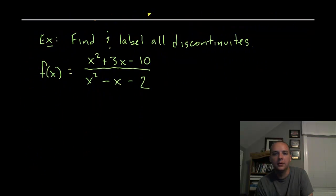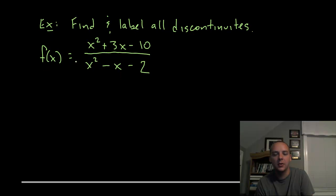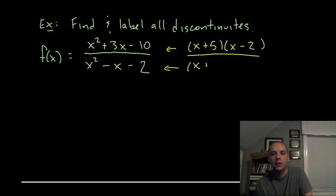Okay, so let's take a look at an example here. Find and label all the discontinuities of this function here. So this is a rational function, as we would probably guess what we need to do first is factor these numerators and denominators to see what types of things may cancel, or what things could give us division by zero. The numerator factors as (x+5)(x-2), and the denominator factors as (x+1)(x-2). So we see a couple of discontinuities here: we have a discontinuity at x=-1, and we have a discontinuity at x=2.